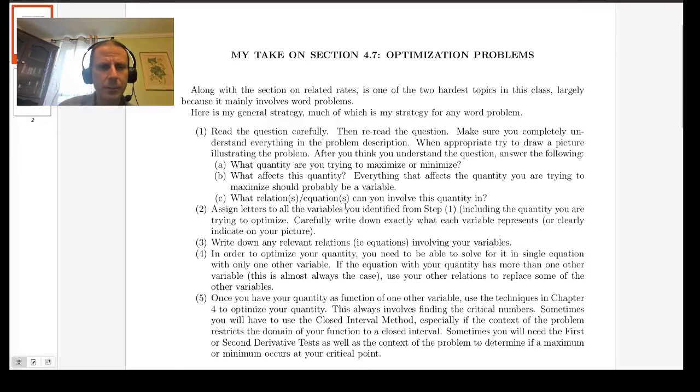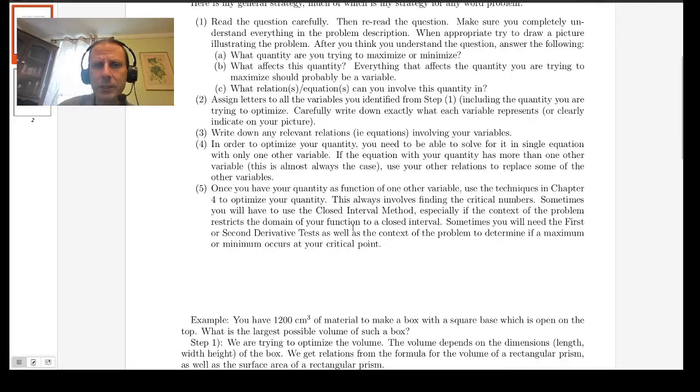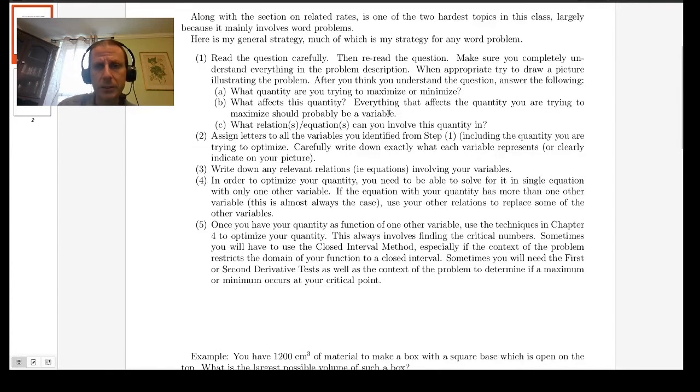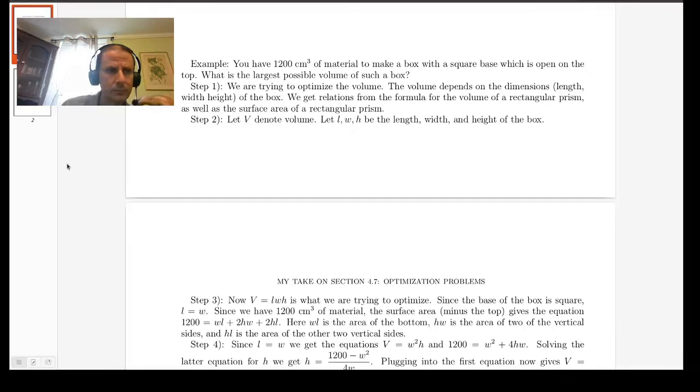So once you understand the problem pretty well then we need to start finding a way to introduce variables and equations so that we can apply some awesome mathematics. So in step one you should have tried to identify what affects the quantity you're trying to maximize. Generally every single thing that might affect that quantity needs to have a variable assigned to it. And these problems get pretty complicated so it's super important that you show clear work at every step of the way. So as part of that I want you to carefully write down what each variable represents or perhaps indicate it on the picture.